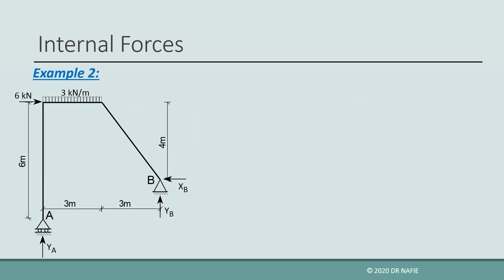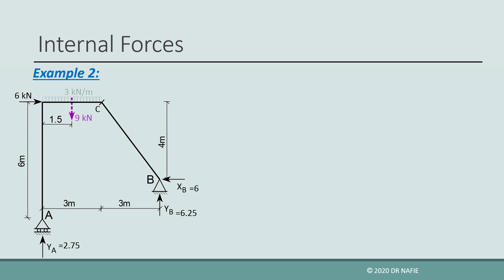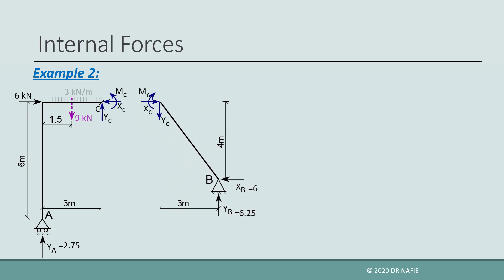Let us look at a second example. For the frame shown, it is required to evaluate the internal forces at point C. First, we convert the distributed load to an equivalent concentrated force so we can easily use it in our calculations. Then the reactions are evaluated by applying the equilibrium equations on the whole frame as shown in the previous lecture. Now that the reactions are known, we cut the frame into two parts at point C so that the internal forces XC, YC, and MC can appear. We will use part CB on the right of point C.